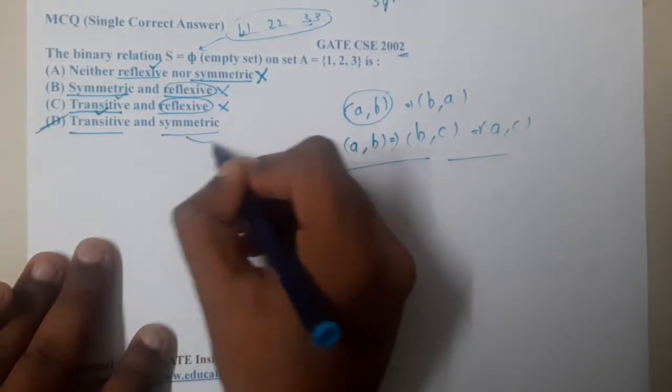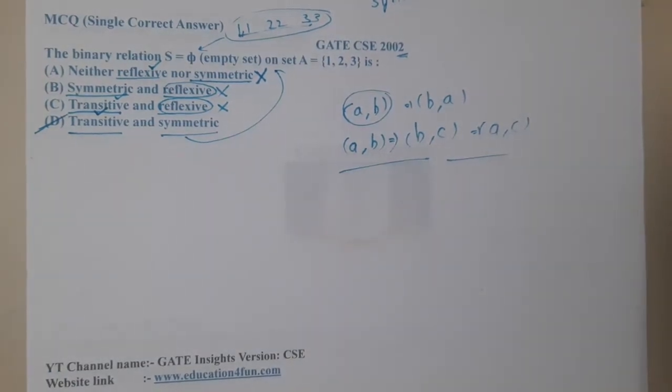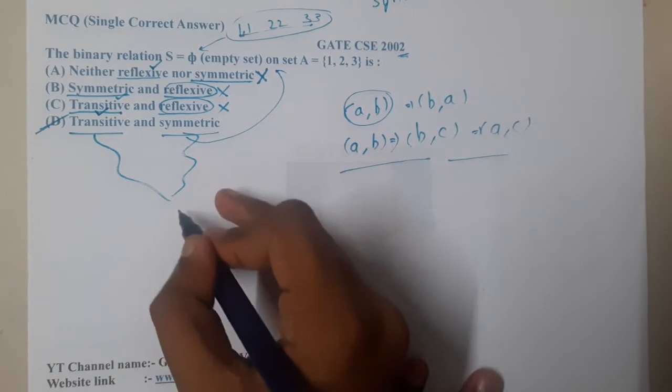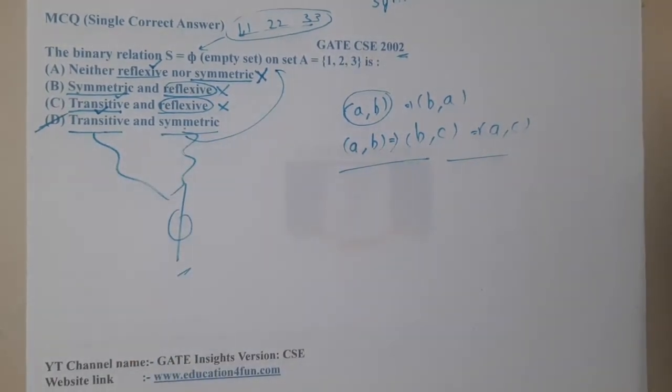Option D says that it is transitive and symmetric, so that's absolutely correct. If you recall, we have already discussed this in our theoretical classes guys. I clearly told that the smallest set or the empty set is transitive as well as symmetric. Got it?